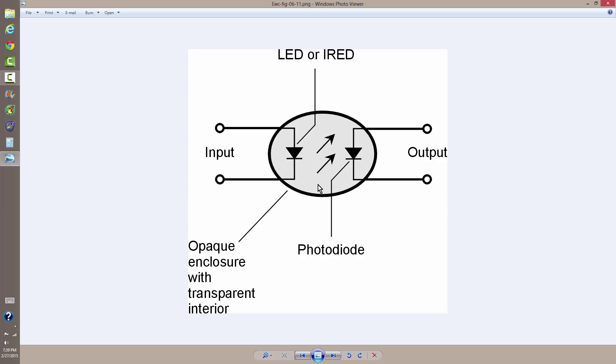An opto-isolator, also known as an optical coupler. That's a very basic component that any electronics experimenter should learn about if they don't already know about it.